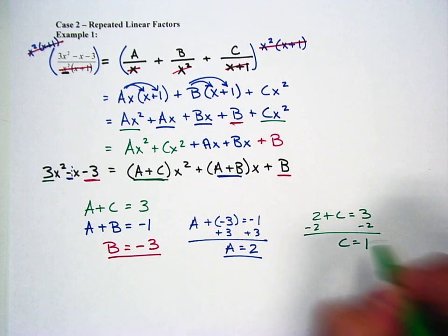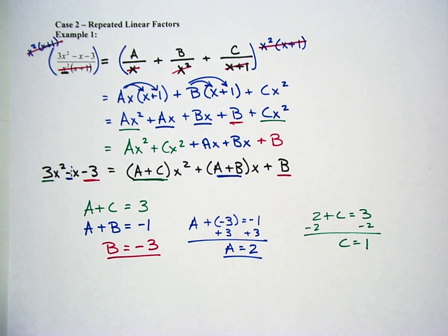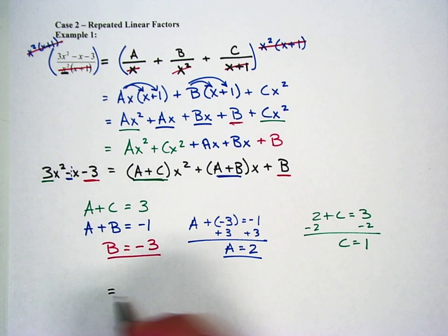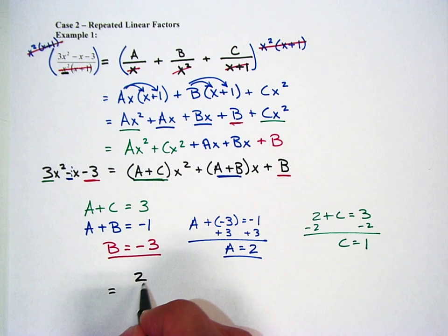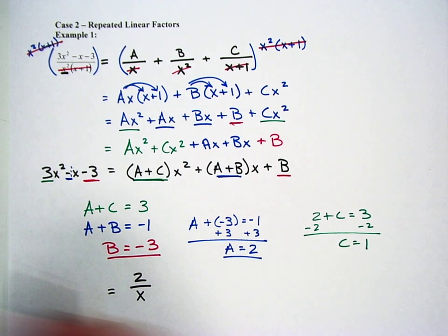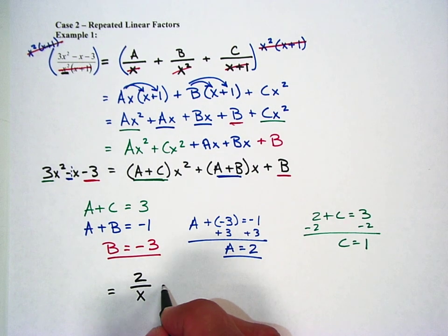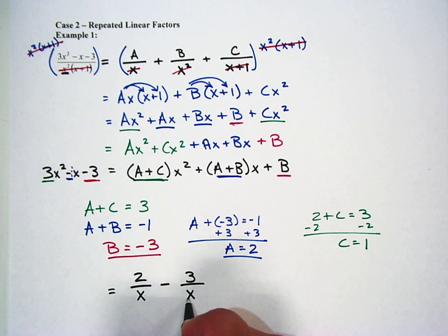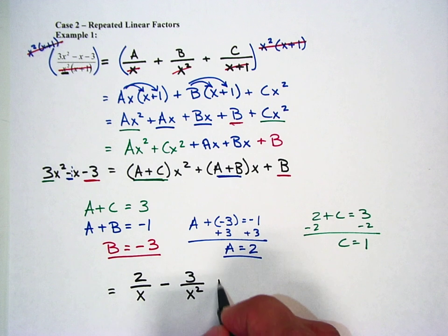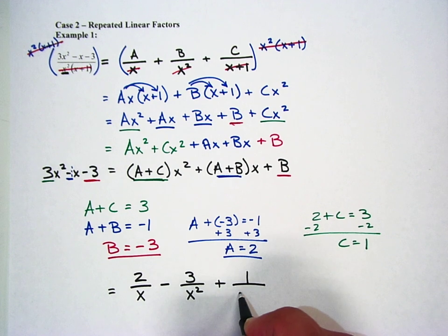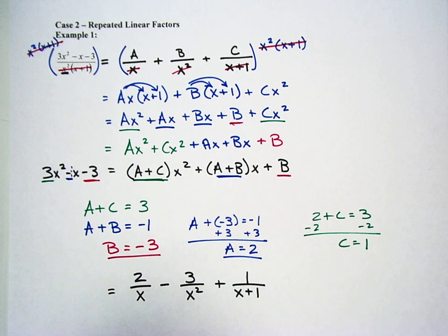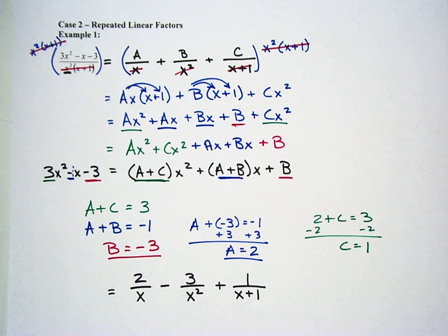So now what I have is my A, B, and C values. So I'm going to go and look back up at the top. A is 2, so I put 2 over x. B is negative 3, so I'm going to say minus 3 over x squared. And then finally, C is 1, so I'm going to say 1 over x plus 1. And that is how you do repeated linear factors. Now I'm going to do one more example with this. And that will be on the next video. So enjoy and good luck.